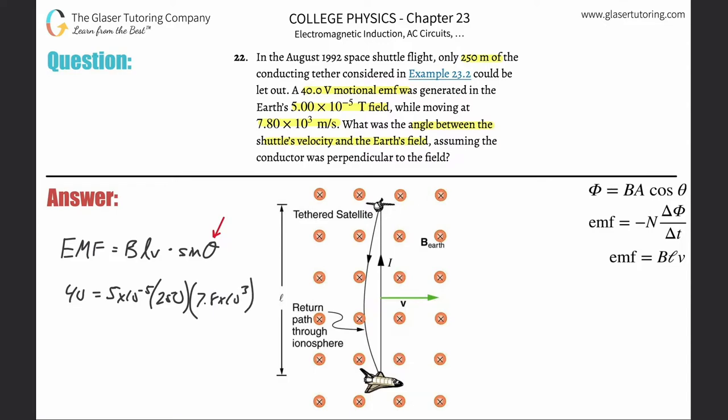The velocity then of that tether was 7.8 times 10 to the third meters per second. And now what I'm going to be doing is I'm going to be solving this for my theta. So that's then multiplied by sine of theta.